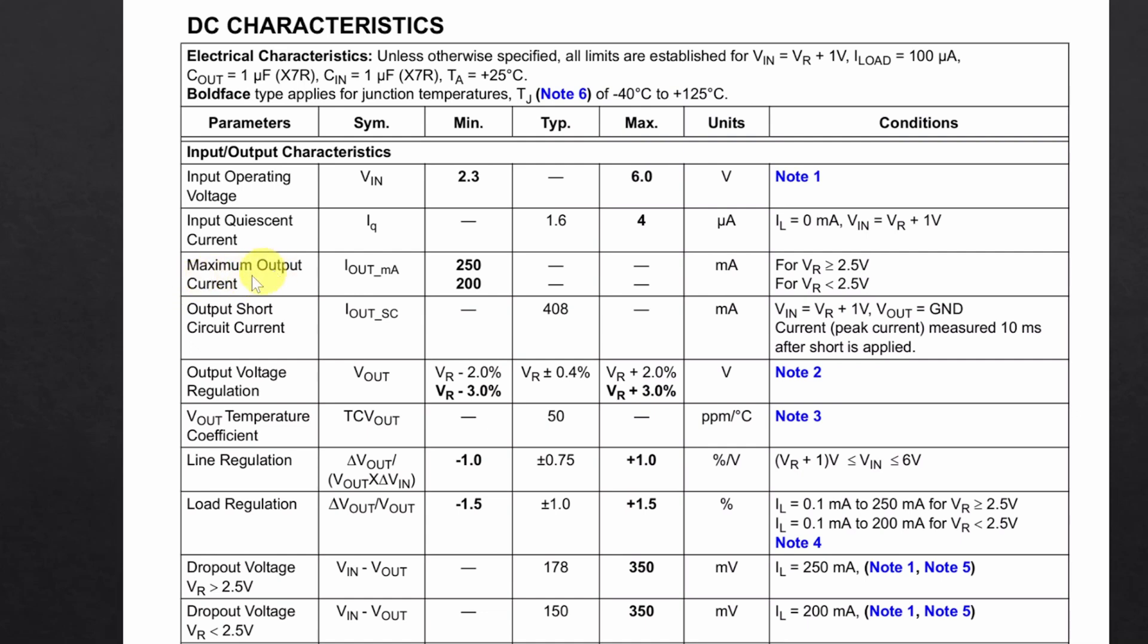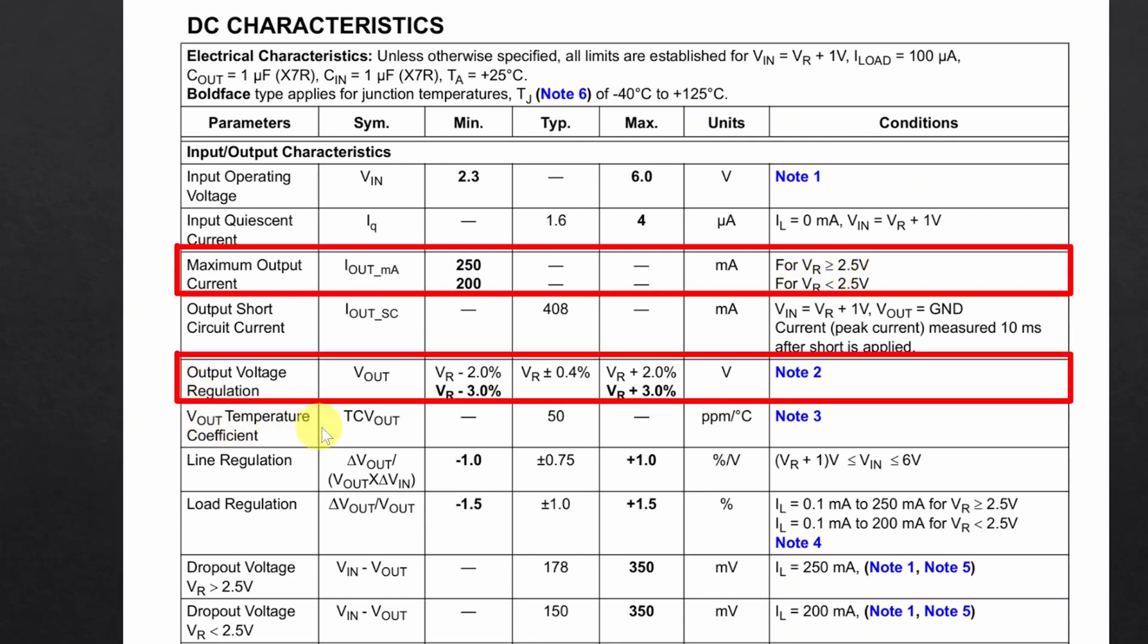Next parameter is maximum output current and it's 250mA for the 3.3V regulator. And here in the output voltage regulation row we can see that there can be a plus minus 3% discrepancy in voltage regulation.